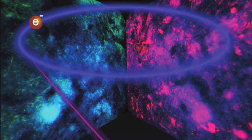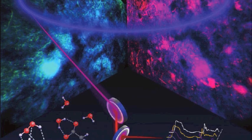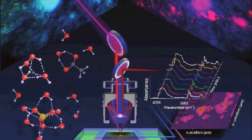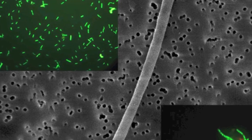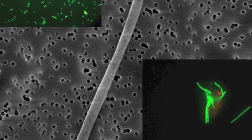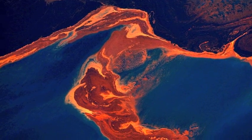We've done a lot of work on living samples — looking at cells, bacteria, mammalian cells. We're well below the energy threshold where we do any damage to the cells, so we can look at them live. We've also looked at bacteria as they are degrading oil from the Gulf oil spill.